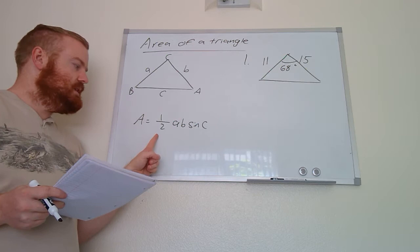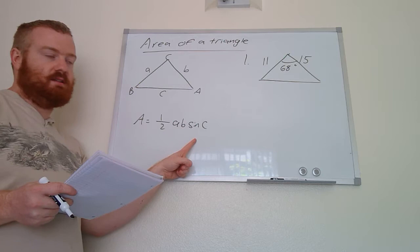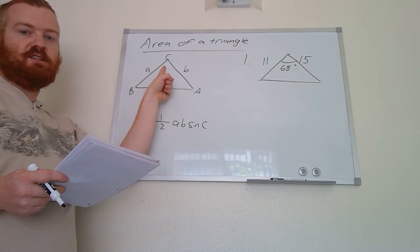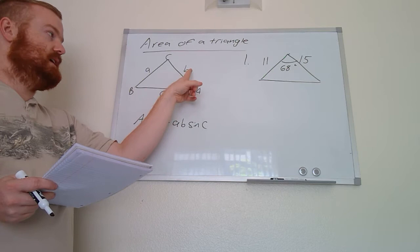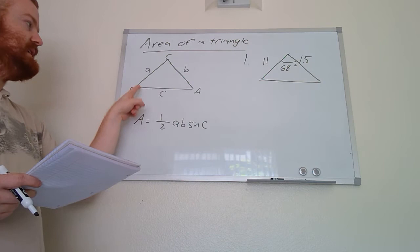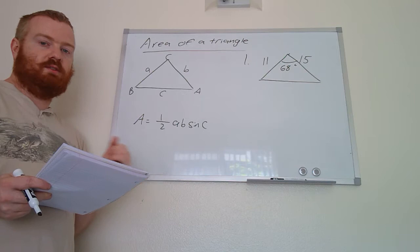The first formula we're going to use: for a standard triangle, the area equals one-half AB multiplied by the sine of angle C. Angle C is the angle between side lengths A and B. You don't have to specifically use A and B — for example, if you have sides B and C, you use angle A; if you have sides A and C, you use angle B. We need two side lengths and the angle between those two sides.